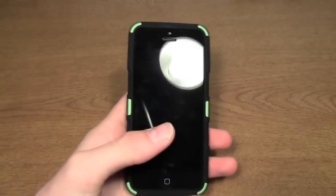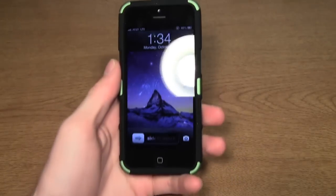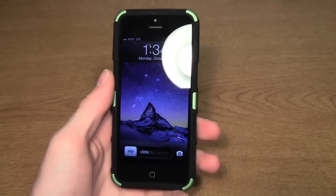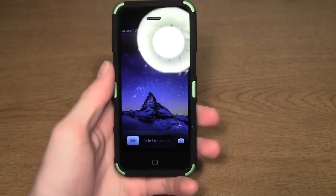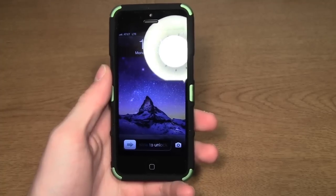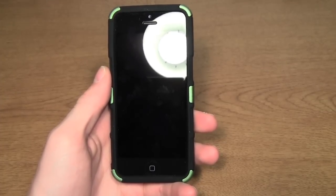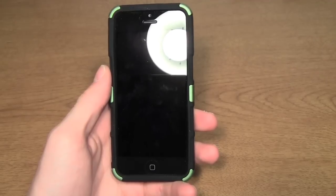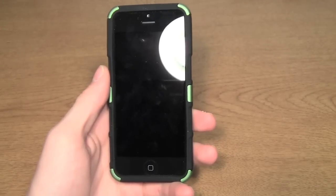So this case retails for $49.95 with the holster and it comes in black, white, green, red, purple, and blue. And if you just want to get the Active case without the holster it's going to cost you $29.95.